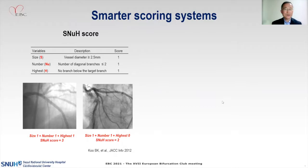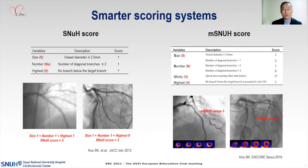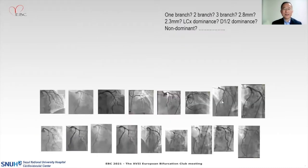Almost 10 years ago, the SNOO score was developed, integrating size, number, and the location of branches. And recently, we also proposed a modified SNOO score, integrating an additional index which is relative dominance among the branches and also between the other vessels. This can be useful. However, it is not easy to calculate all the scores in the cath lab.